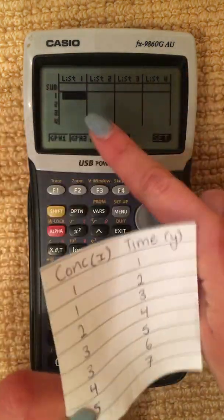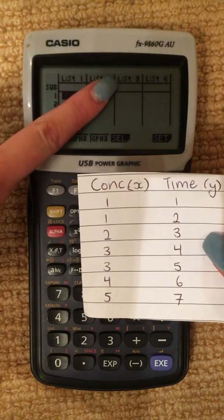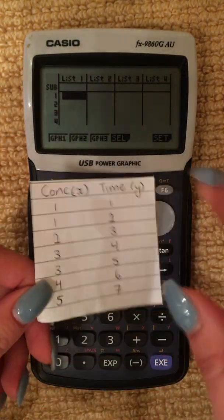These data values, we want to put in there now. So our X values will go in our List 1, our Y values in our List 2. So our X values,